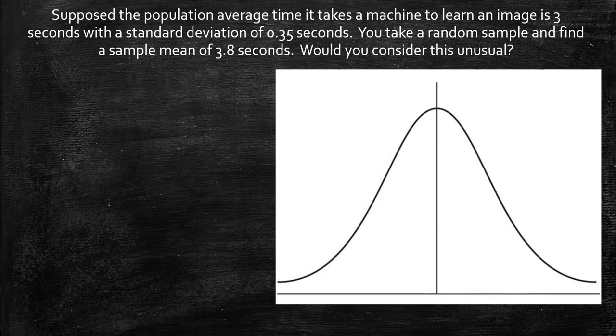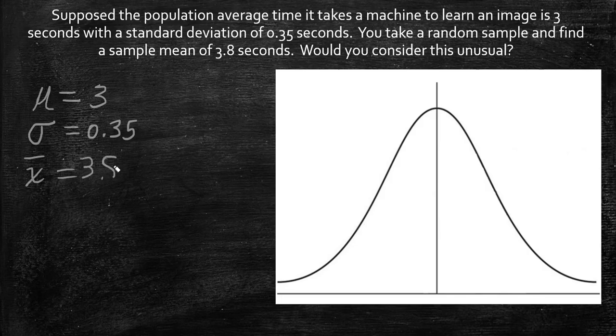Suppose the population average time it takes a machine to learn an image is three seconds. That would be the population mean, with a standard deviation of about 0.35 seconds. You get a random sample with a sample mean of 3.8 seconds.